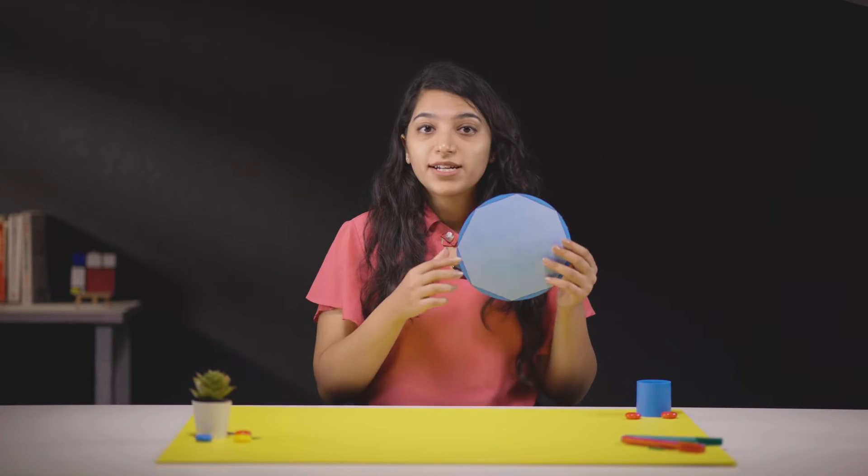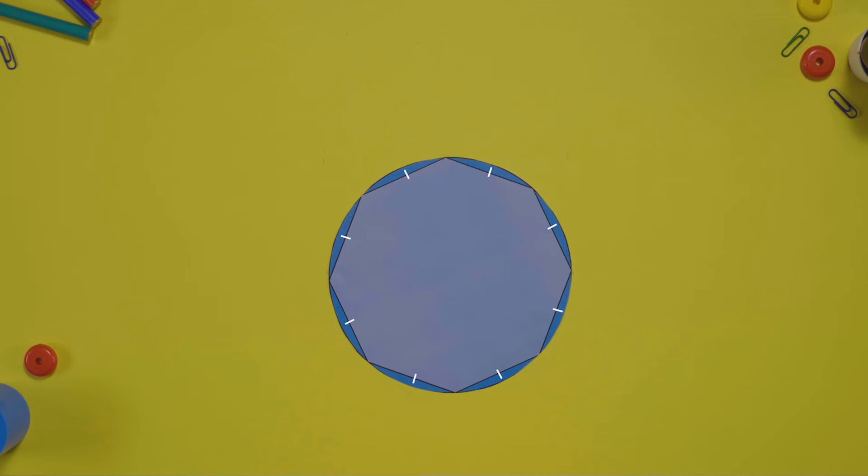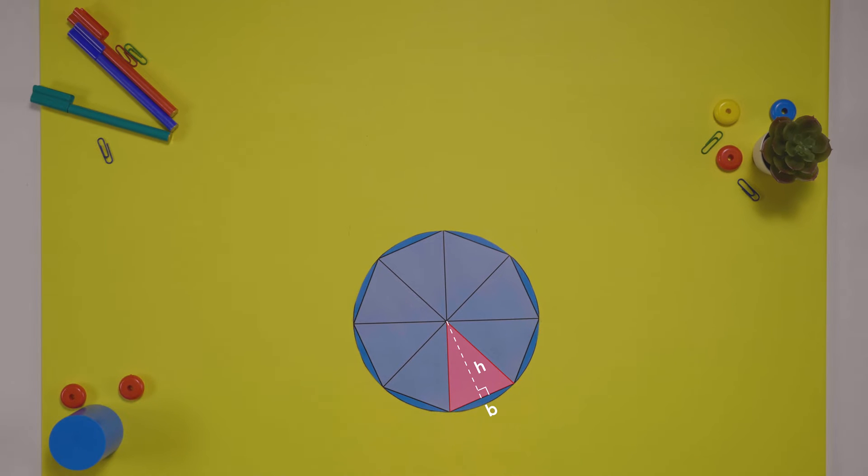Let's start with an octagon with eight equal sides. If we join its corners to the center, we get eight equal triangles. The area of each triangle is half times base times height. So the total area is eight times this.